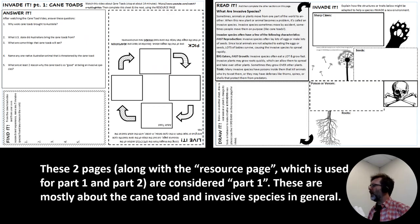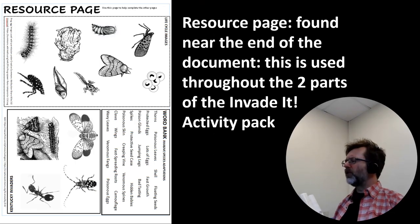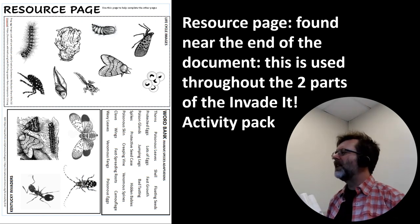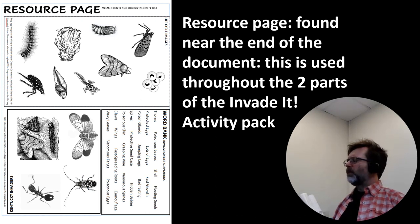Here are the first two content pages of the lesson plan — Part One — which is mostly about cane toads and invasive species in general, not yet about invasive insects. Youth use these two pages along with the resource page to complete Part One. The resource page is toward the end of the document and is used for both Part One and Part Two — it has life stages to cut out, other creatures to cut out, and a word bank of ideas for invasive species adaptations.